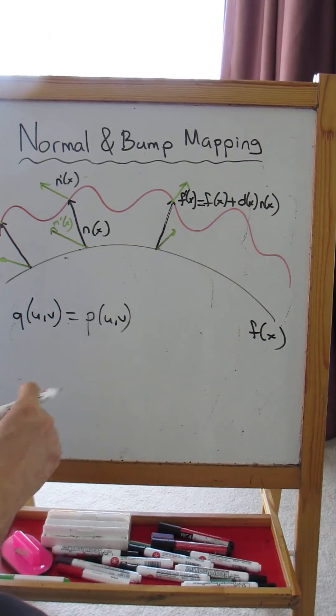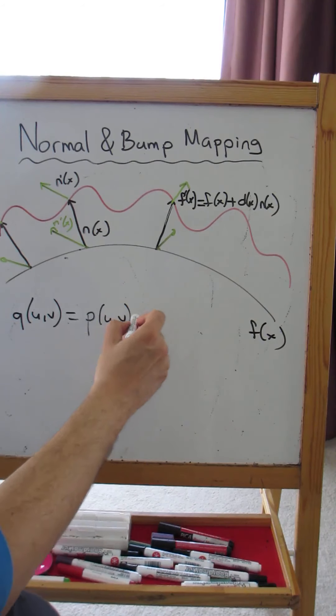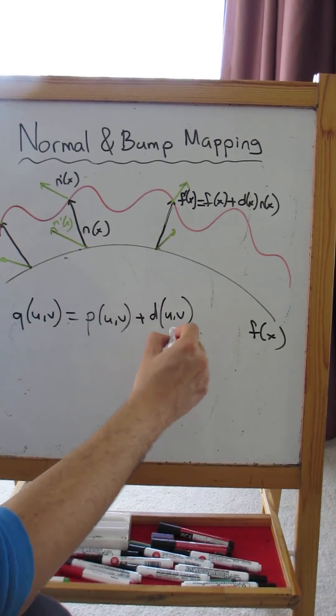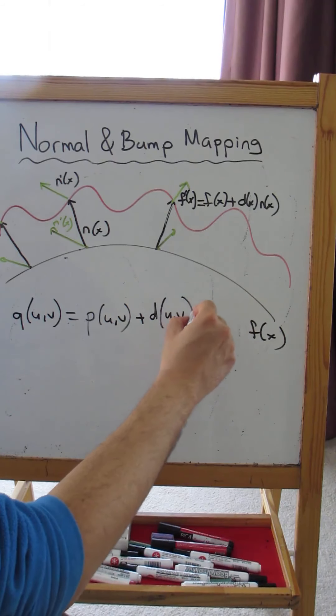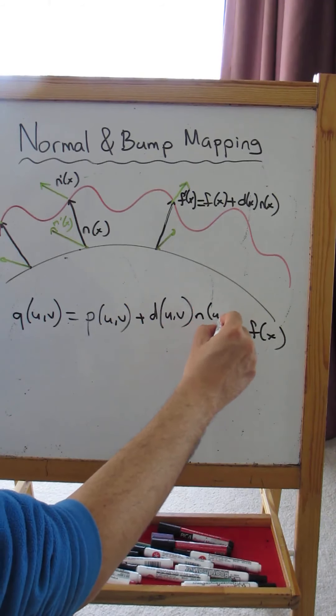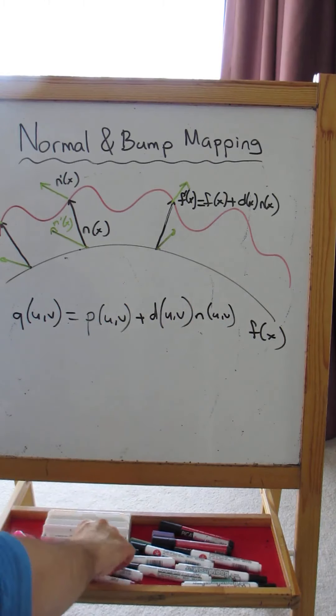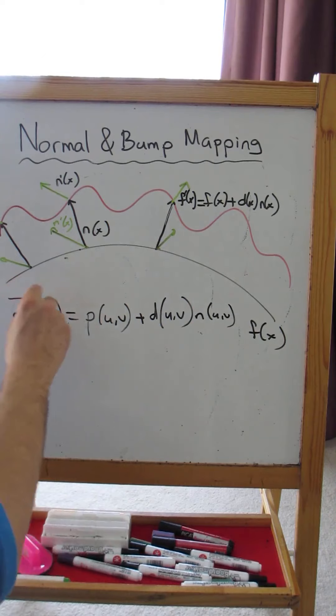So the new surface is going to be the P(u,v) original surface plus a displacement value at (u,v) multiplied by the surface normal at (u,v). So this form is identical to this form.